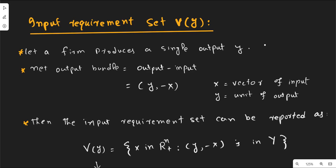This is not the production plan — rather, this is the output. As you know, the net output bundle is written as output minus input. The output is positive, and the associated input factor has a negative sign representing payments — money outflow — to the factors of production. Output is single, but the factor input is not a single one.